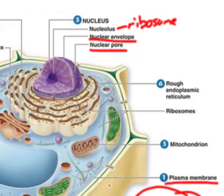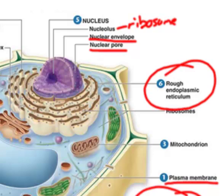Usually surrounding the nucleus is a whole network of what is called the rough endoplasmic reticulum — sometimes called the rough ER for short, because endoplasmic reticulum is a pretty big mouthful. It's called rough because the surface is dotted with little ribosomes. Ribosomes are made by the nucleolus and they're like little factories — they build molecules, and they especially are good at building proteins.